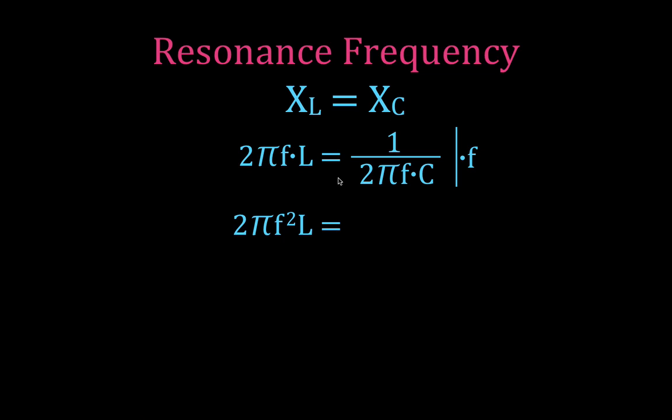That gives us 2πf²L equals 1 over 2πC. Now I'm going to divide both sides of the equation by 2πL. That gives me that f squared, the frequency squared, is equal to 1 over 4π²LC.